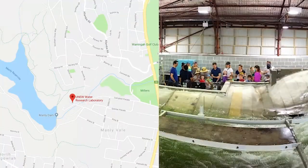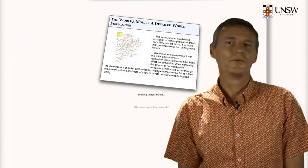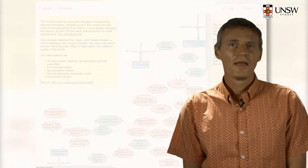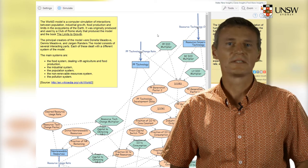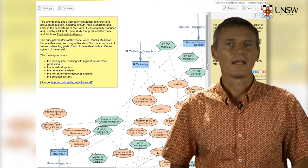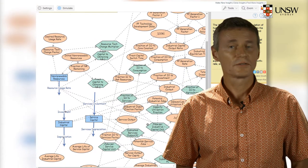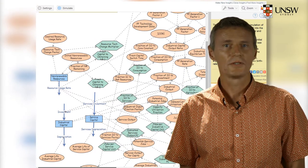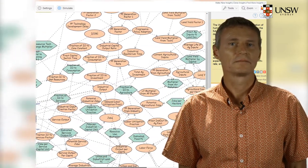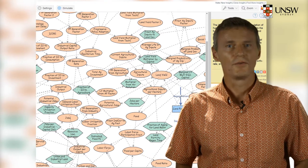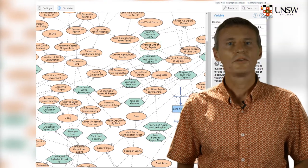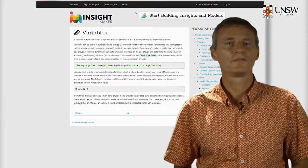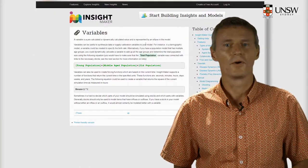I suggest you go there if you haven't been there yet. Another type of model are computer models. You will get to know the World 3 model this week, which is a systems dynamics model that has been used to predict how world resources, pollution, and human wellbeing, amongst other things, will change in the future depending on human behaviour. And you will be able to run your own scenarios with a specific online version of the World 3 model.